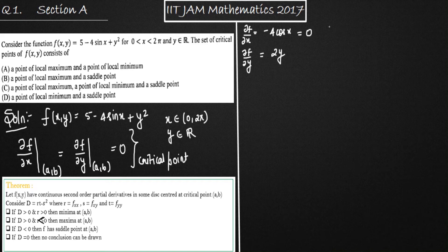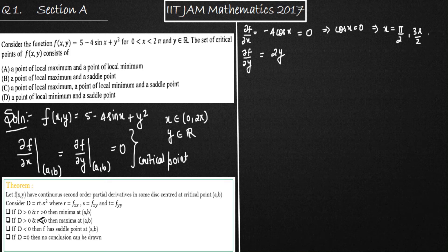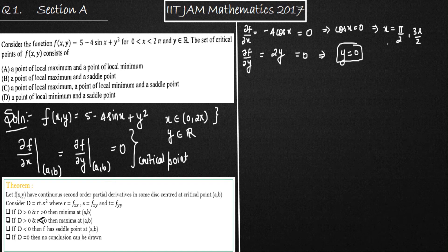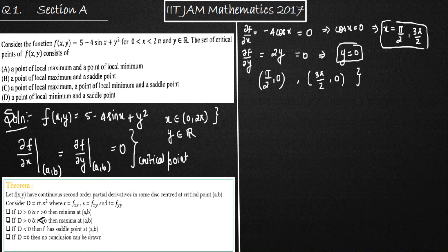If we equate ∂f/∂x to zero, we get cos(x) = 0. The values of x for which cos(x) = 0 in the interval (0, 2π) are x = π/2 and x = 3π/2. Equating ∂f/∂y = 2y to zero gives y = 0. So we have two critical points: (π/2, 0) and (3π/2, 0).